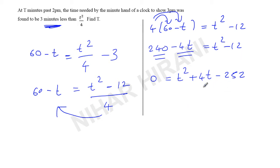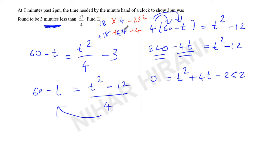Now we need to split this middle term: multiplied they should give negative 252, and added they should give positive 4. I am doing this mentally — you should use prime factorization. That gives us 18 and 14. We take 18 as plus and 14 as minus, because we need plus 4. So: 0 is equal to t squared plus 18t minus 14t minus 252.